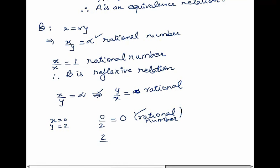But if we do 2 over 0, that is an undefined quantity, so this is not equal to a rational number. So B is not transitive in nature. Therefore B is not an equivalence relation.